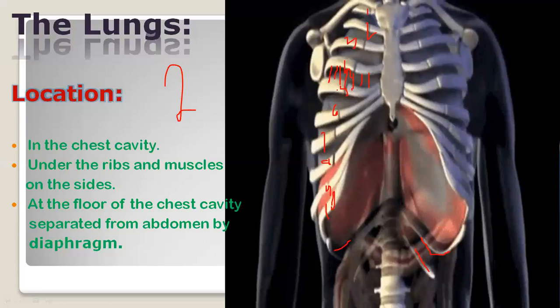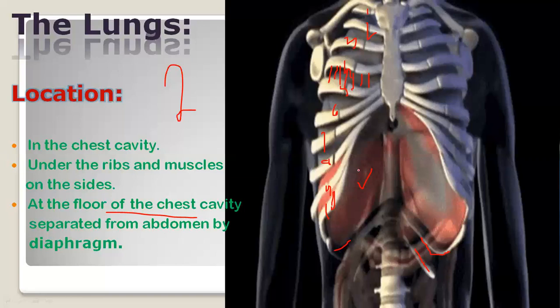At the floor of the chest cavity, covered from below, is a thick muscular organ called the diaphragm. We will discuss in the next lesson how the diaphragm helps in the exchange of gases — how the ribs and intercostal muscles work as protection for the lungs and are also helpful for inhalation and exhalation.